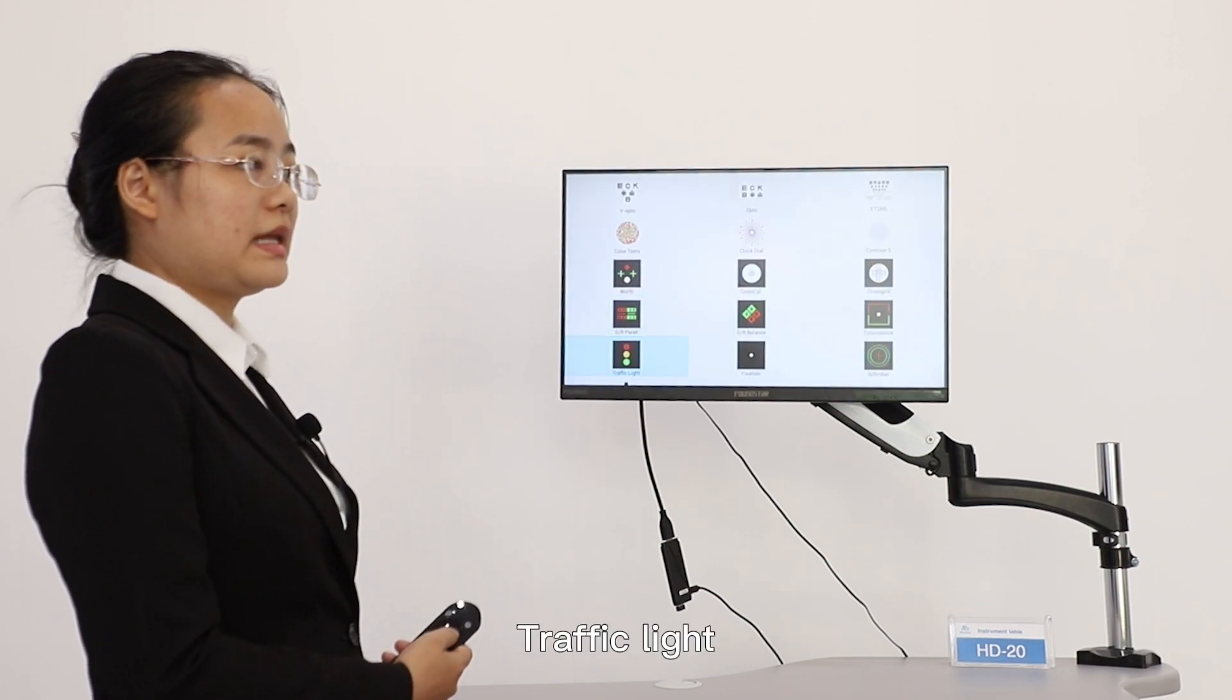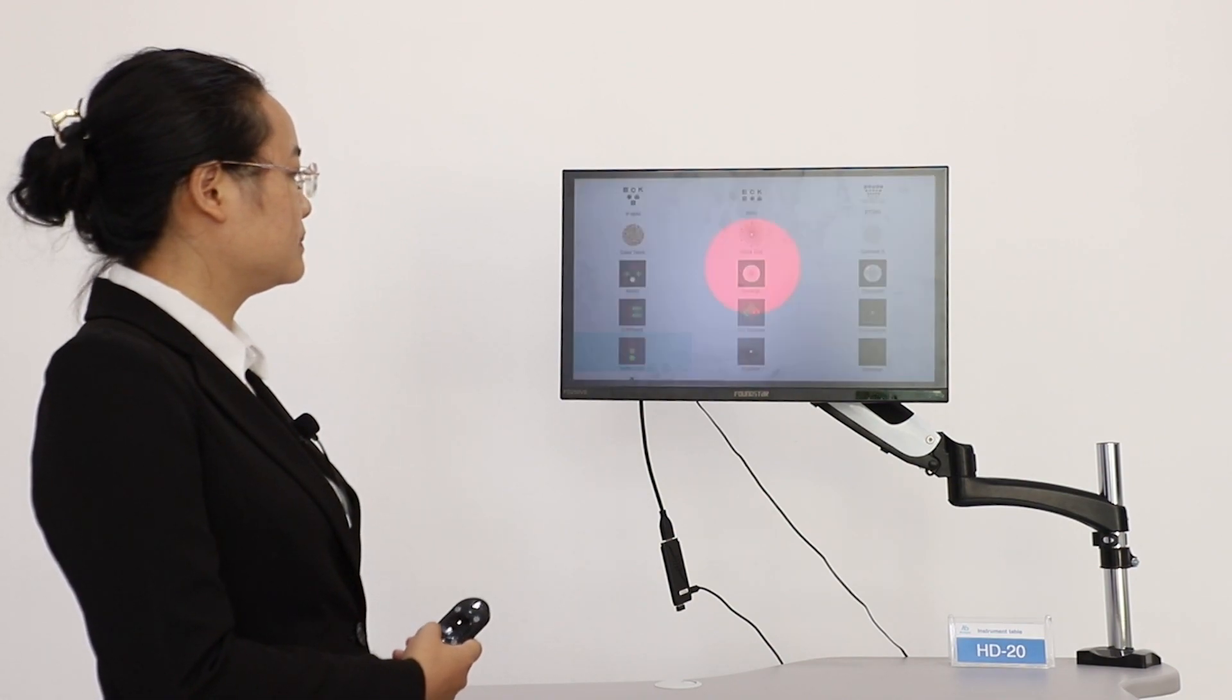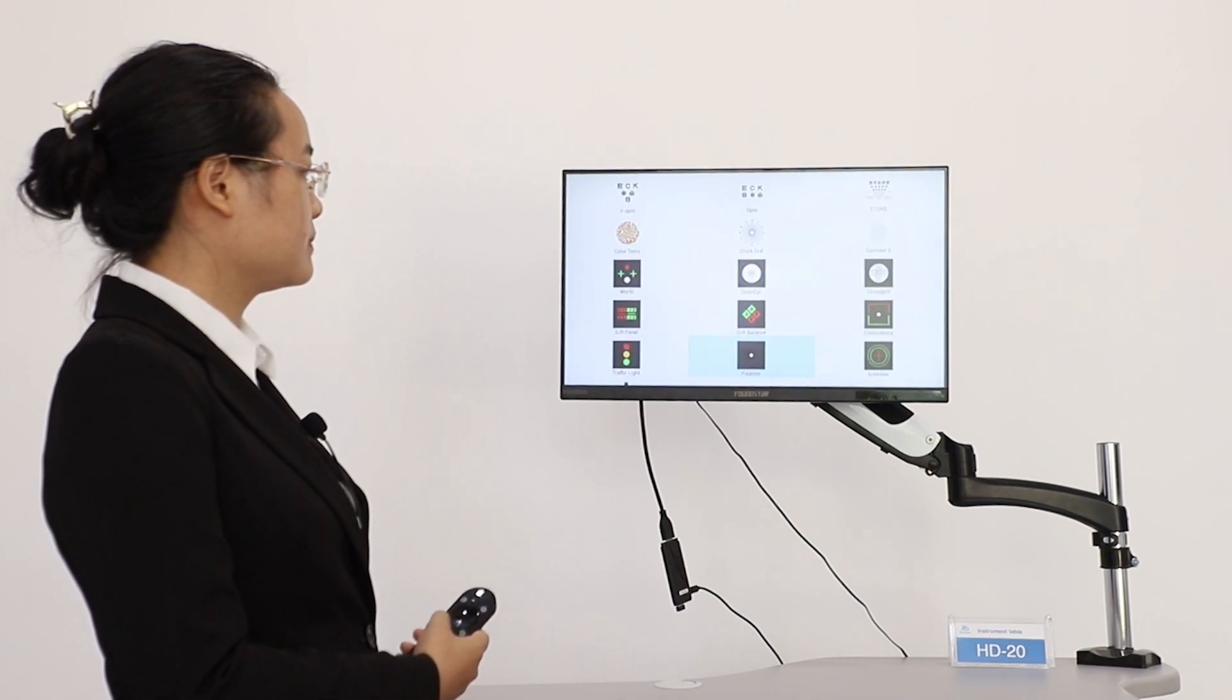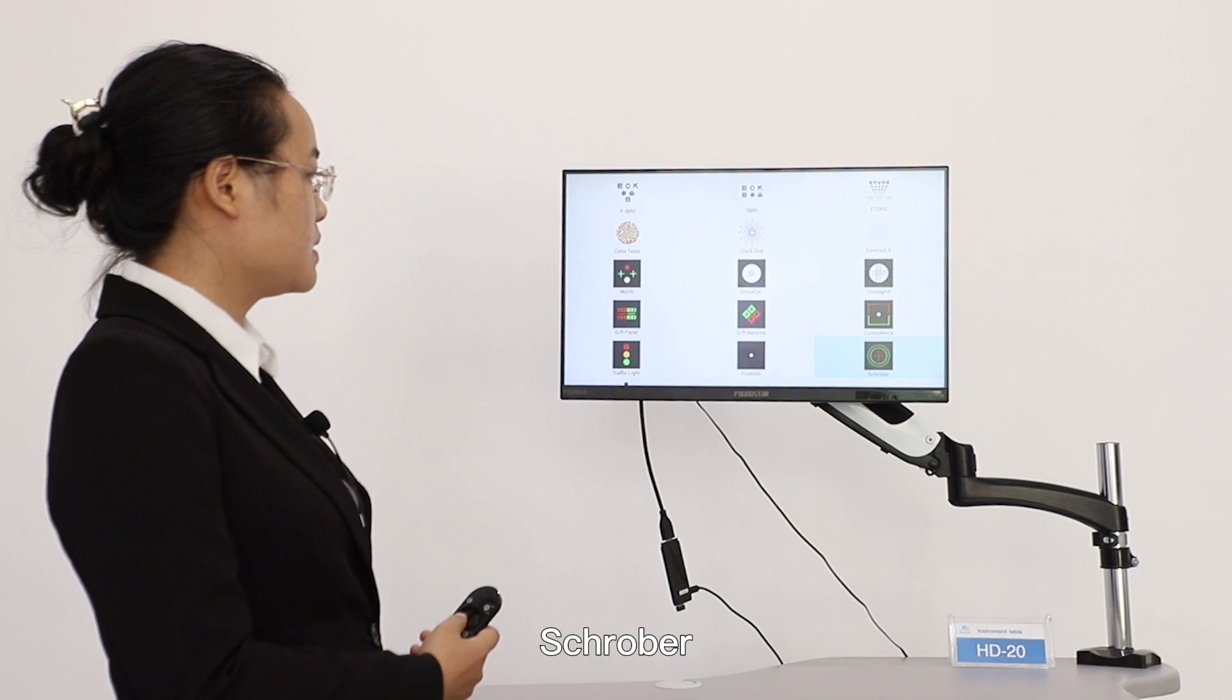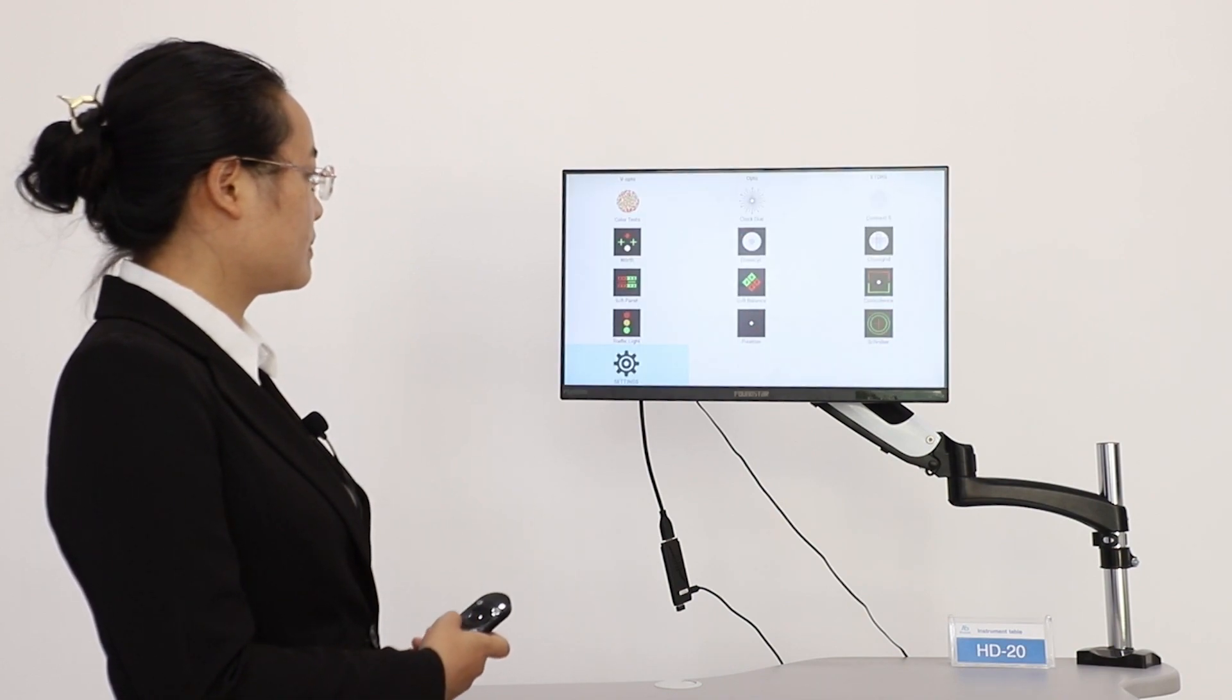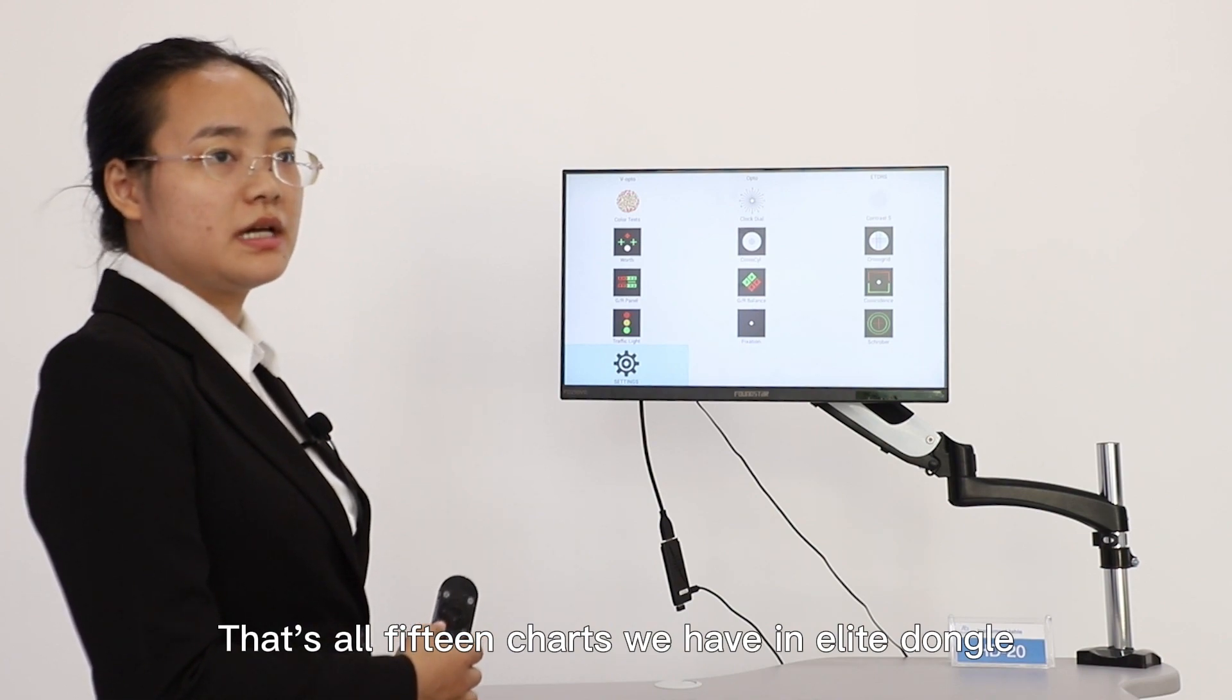Channel, traffic light, fixation, scroll. That's all 15 charts we have in Elite Dungle.